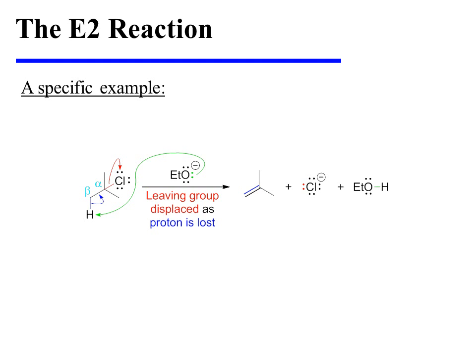In this specific example, ethoxide serves as a strong base, which actively removes a proton from the beta position. As the carbon-hydrogen sigma bond fragments, those electrons collapse in between alpha and beta, thereby forcing chloride from the molecule. The product is an alkene.